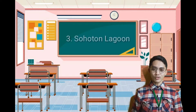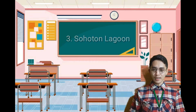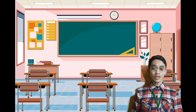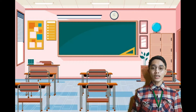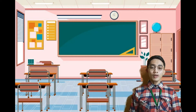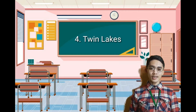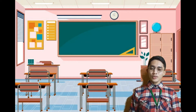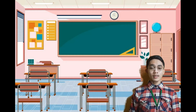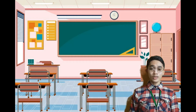Number three is Suhutong Lagoon, a place whose name means narrow opening in the Visayan languages of the Philippines. You can see crystal-clear water and swim with jellyfish because the water is clean. Number four is Twin Lakes. It is composed of two small but deep freshwater lakes called Lake Balinsasayaw and Lake Danao. This place is good to relax because of the beautiful environment and the mountain covered with exotic plant life.